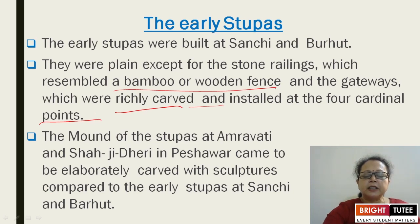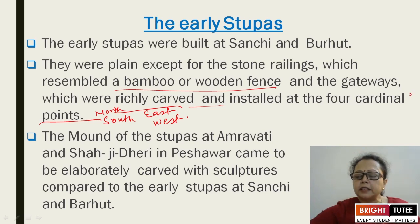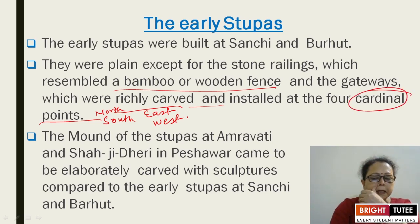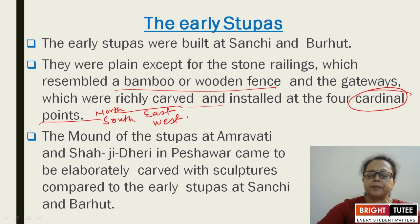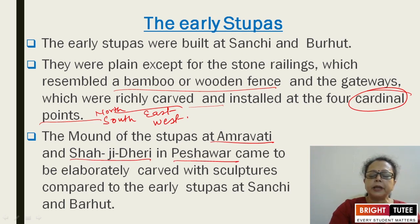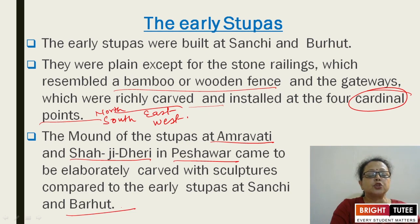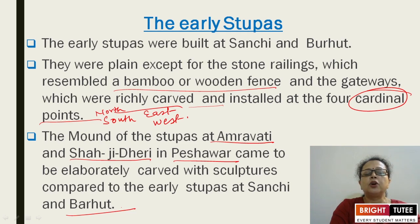The four cardinal points means north, south, east, and west. The gateways were constructed in all four directions. The mound of the stupas at Amravati and Shahji Dheri in Peshawar came to be elaborately carved with sculptures — very different in comparison to the earlier stupas at Sanchi and Barhut.